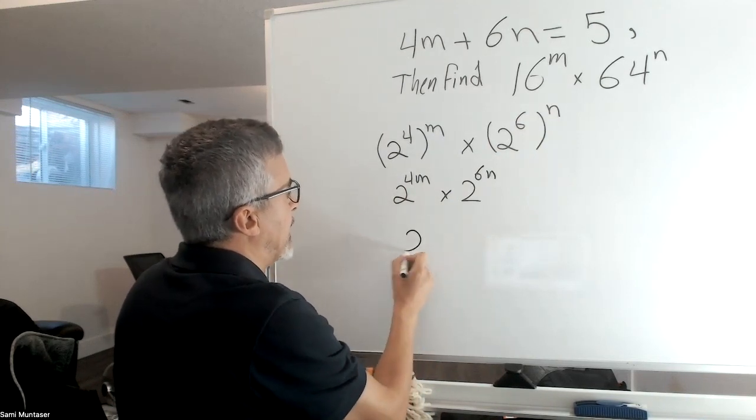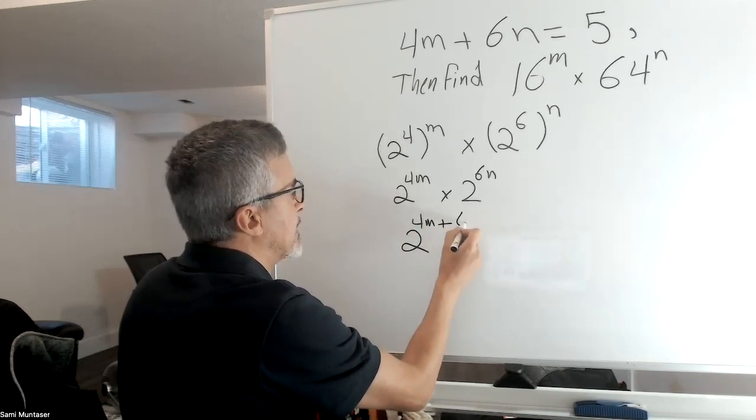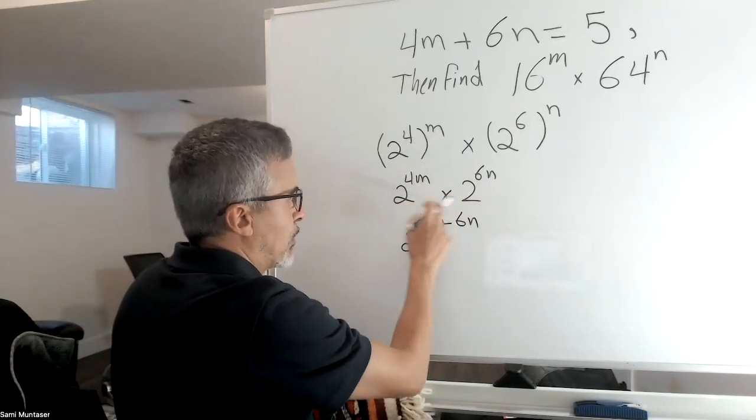And because it's multiplying, I'm going to say this is 2 to the power of 4m plus 6n, as we add exponents when we multiply.